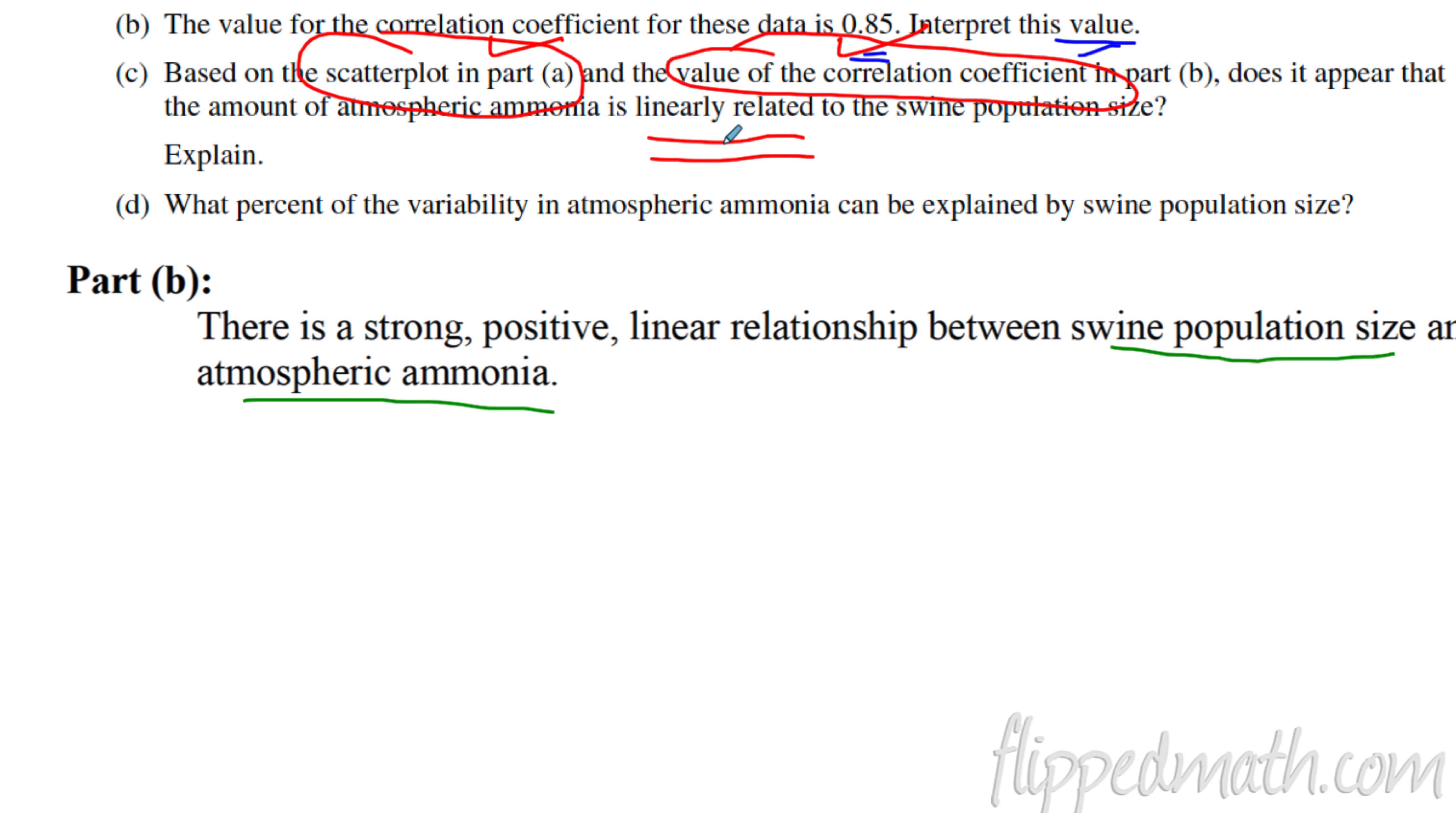And going back to the scoring guide, what do you have to do to get it essentially correct? If the comments are correct and based on both, the value of the correlation coefficient and the scatter plot. So there's some freedom there for you, but you do have to talk about both. Could you talk about a residual plot? Yeah, you could. But that's not what the question asked. It says based on the scatter plot and the correlation coefficient.